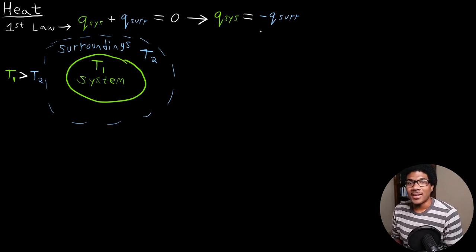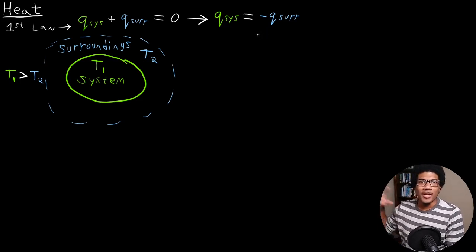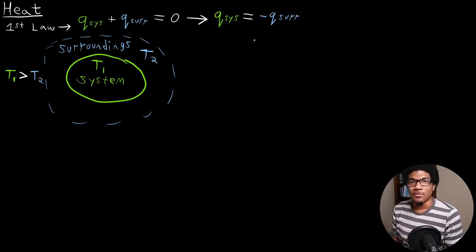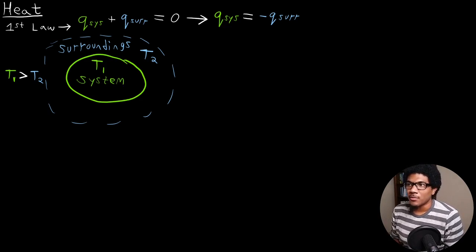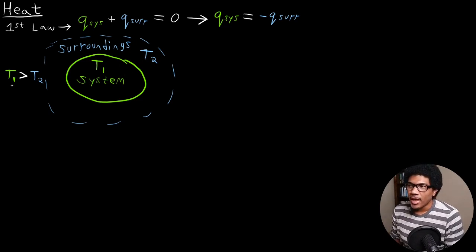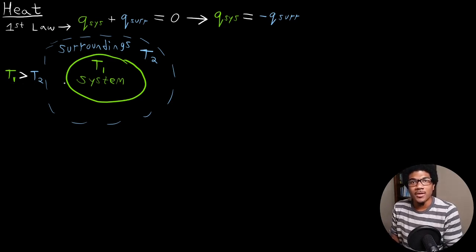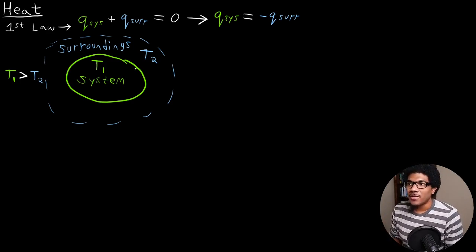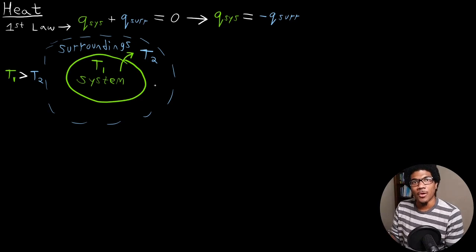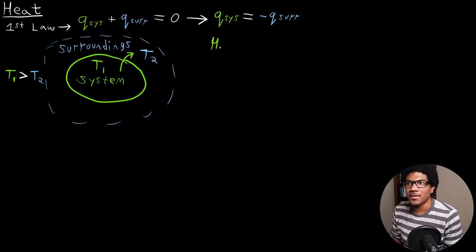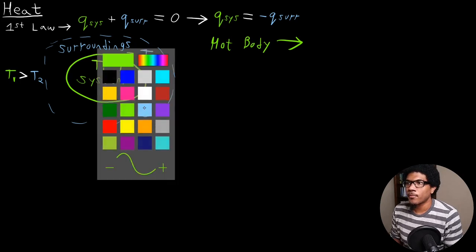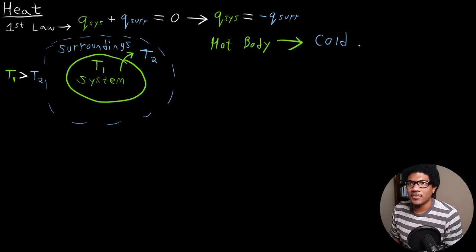If the system loses heat, that heat is going to be gained by the surroundings — basically stating that there's no random outside body that can transfer heat to something in the universe you're studying. What I've set up here is a universe with our system and surroundings at two different temperatures T1 and T2, where T1 is greater than T2. That means there's going to be a heat transfer from the system to the surroundings, because heat flows from the hotter body to the cold body.